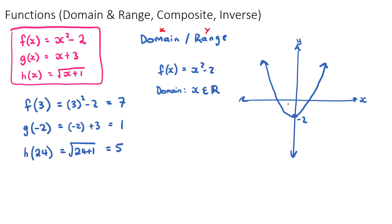If a function goes left and right forever with no asymptotes, the domain is all real numbers. For the range — the possible y values — the parabola goes up forever but only goes down to -2, then comes back up. So the range is y ≥ -2.